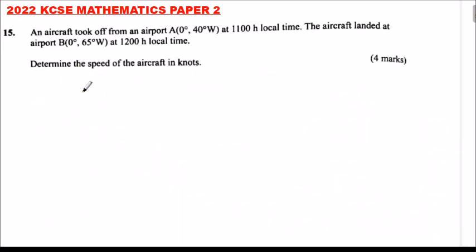2022 KCSE Mathematics Paper 2, question number 15. An aircraft took off from Airport A, location 0 degrees, 40 degrees to the west, at 11 local time. The aircraft landed at Airport B, 0 degrees, 65 degrees to the west, at 12 hour local time. Determine the speed of the flight.